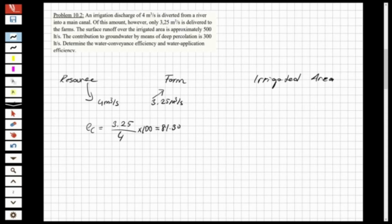Now let's find the irrigation efficiency, the application efficiency. The application efficiency: I have 3.25 meter cubic per second at farm, it reached the farm. But if you look at the question, it says that the surface runoff over the irrigated area is approximately 500 liter per second. So 500 liter per second, if you know that one meter cubic is equal to thousand liters, so I'm going to make this conversion: 500 over 1000 will be equal to 0.5 meter cubic per second.